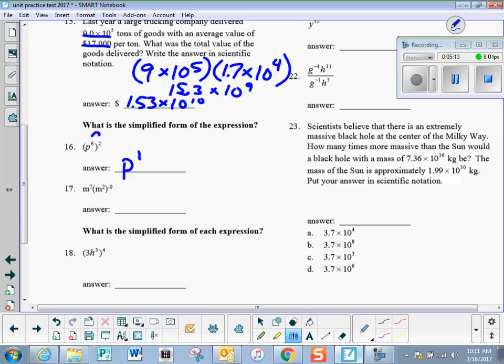Number 16, if I have a power to a power, I know I can just simply multiply the power, p to the 12th. This would be m to the 7th times m to the negative 18th, because I have to distribute that through the parentheses. And then I know that 7 plus negative 18 is negative 11, and then to make it positive, I have to put it under 1.